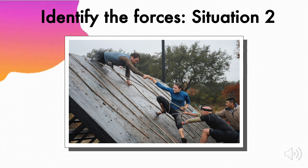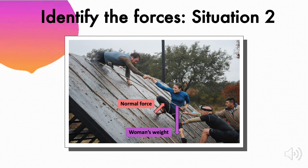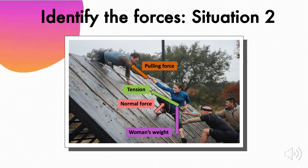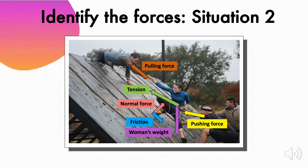How many forces are acting on the woman? Again, I noticed that there are six forces acting on her. First is her self weight. Second is normal force acting perpendicularly to the inclined wall surface. Third is tension or pulling force from the rope. Fourth is pulling force from the guy on the top. Next is pushing force from the guy below her. And lastly, friction acting between her feet and the wall.